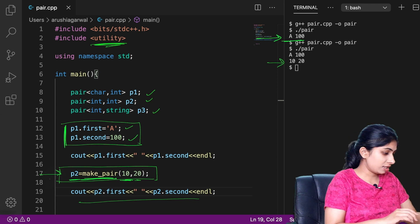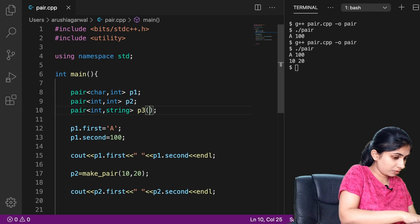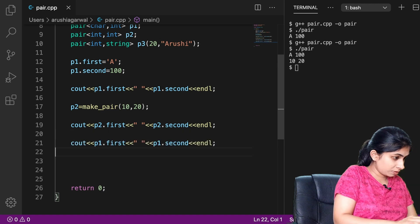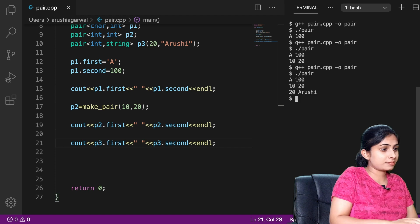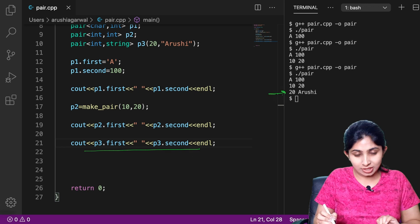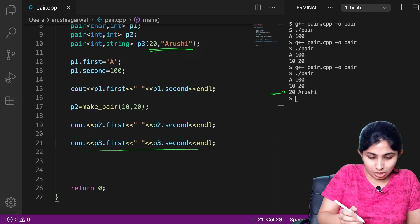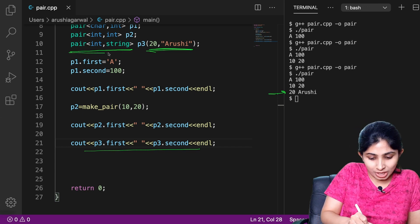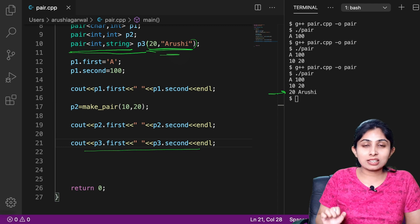Now let's see the next technique. See here, I got the output for p3 as 20 and arushi which is the data I passed over here. So this is the third technique of how I can define and initialize my pair, where I am defining my pair and in the brackets I can pass the data for first and the second element.